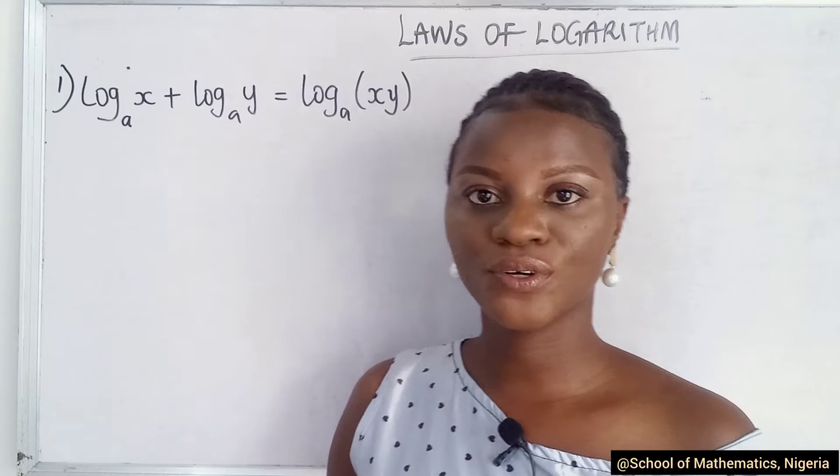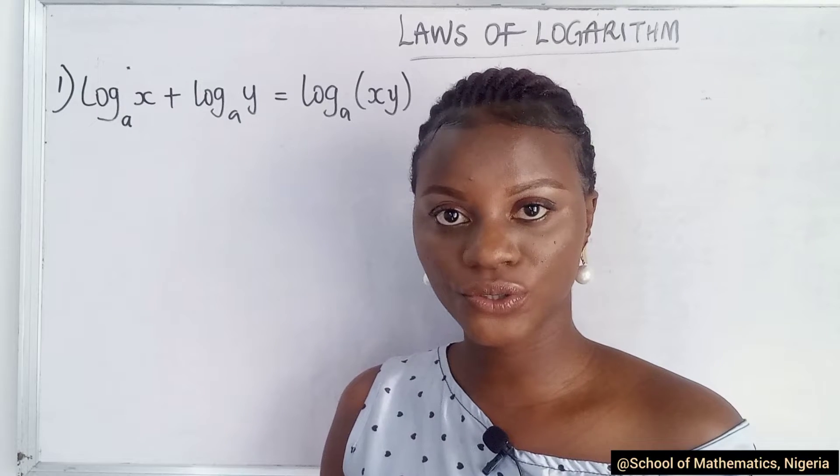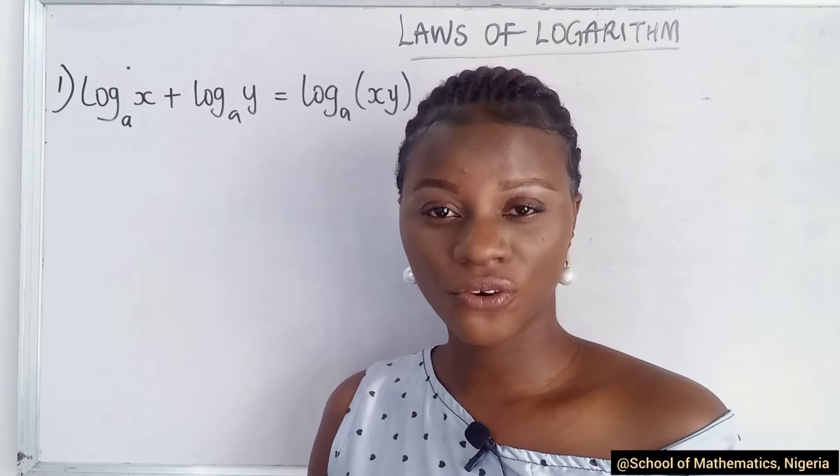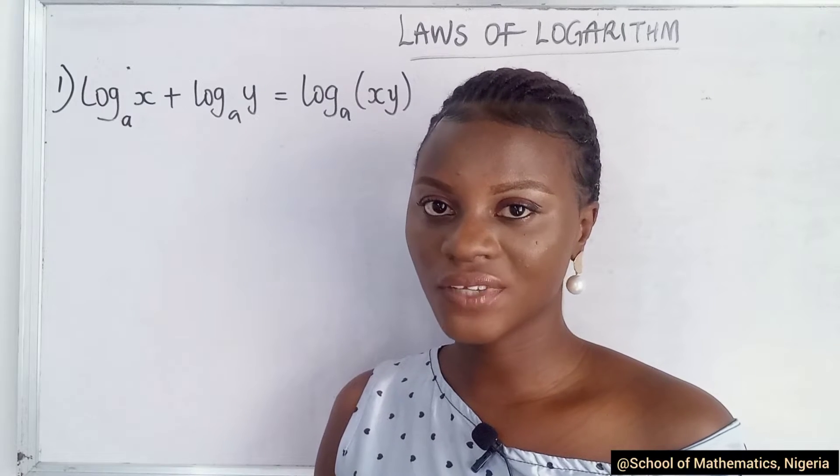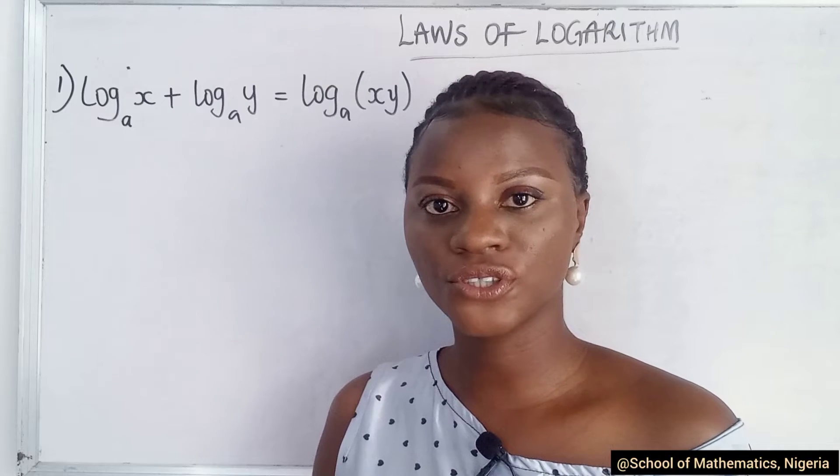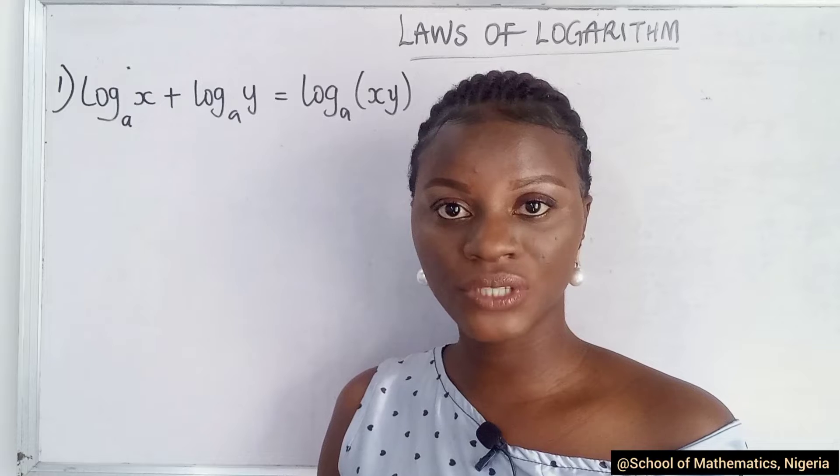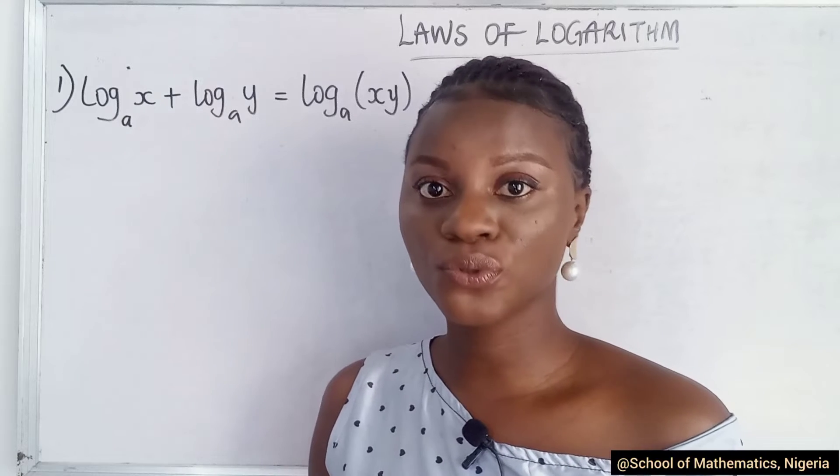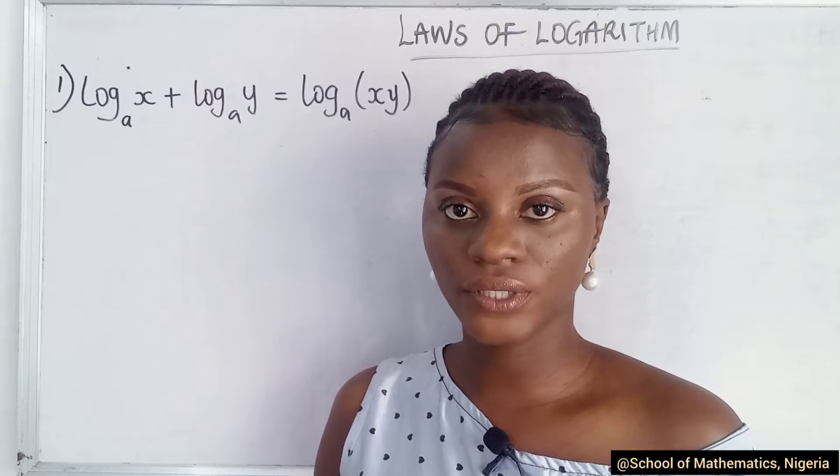Today we'll be discussing the laws of logarithm. From our previous classes, we were able to discuss the introduction to logarithm, what logarithm is, the types of logarithm, and solved an example showing the relationship between indices and logarithm. So now we want to show the rules. What are those things we are supposed to know before we're able to solve questions in logarithm?